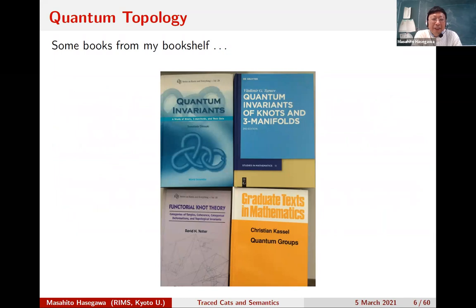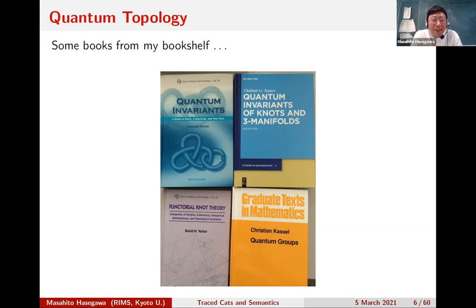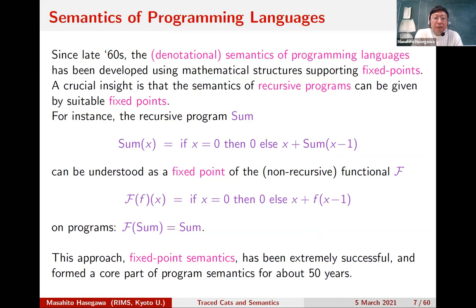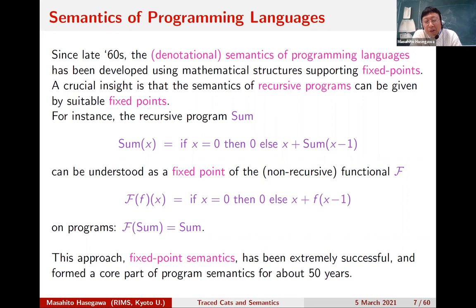Returning to my point: we have semantics of programming languages using nice structures, typically involving fixed points of constructions, for over 50 years. We are very much interested in recursive programs. Recursive means a program might be defined using the program itself — a self-referential or circular definition. For example, a summation program: sum(X) returns zero if X equals zero, otherwise it calculates X plus sum(X minus one). It uses its own result recursively.